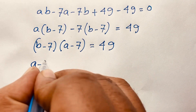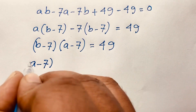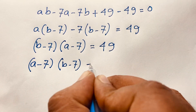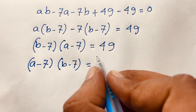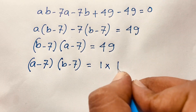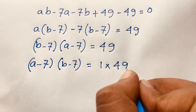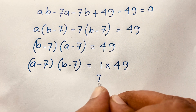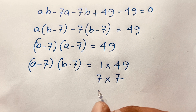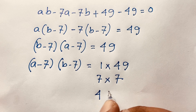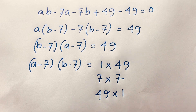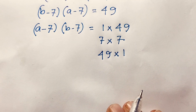So (a minus 7) times (b minus 7) equals 49. Factoring 49, the possible pairs are: 1 times 49, 7 times 7, and 49 times 1. This gives us three cases.